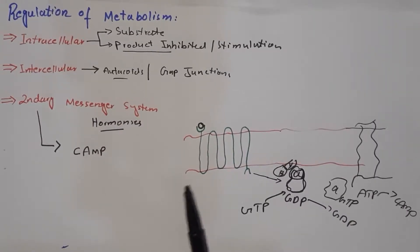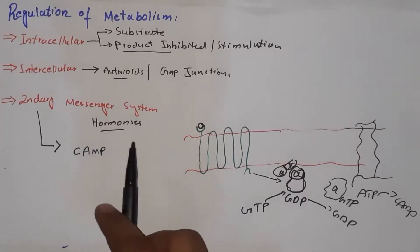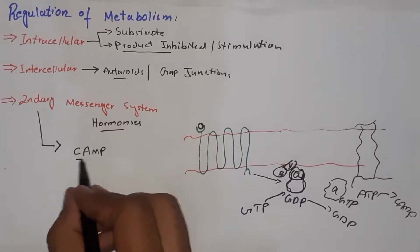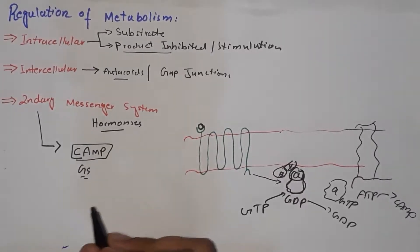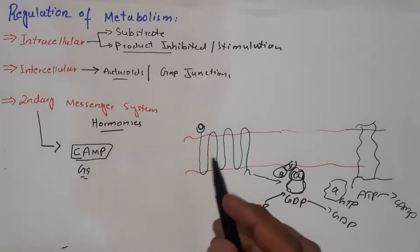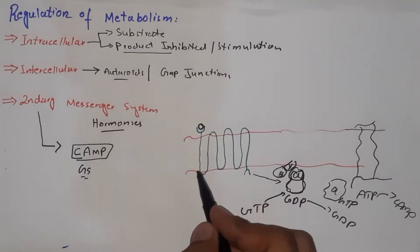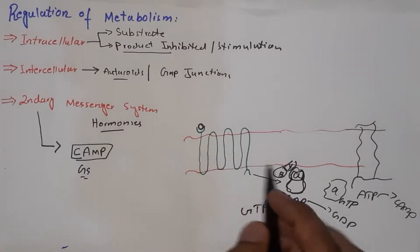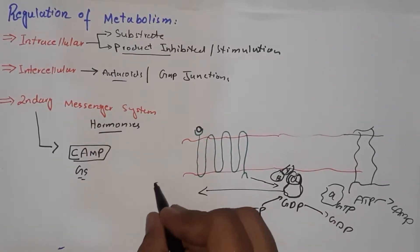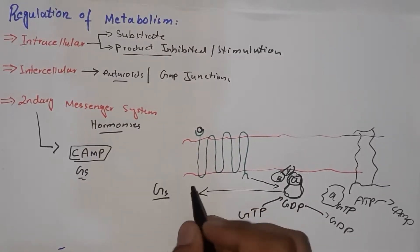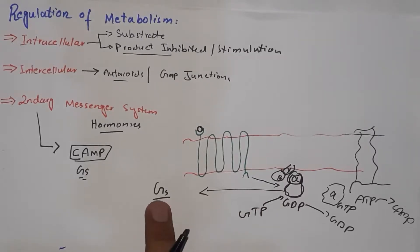To summarize what we've discussed: in the cyclic AMP pathway, also called the GS pathway, a hormone comes and binds to its receptor on the membrane, and this receptor interacts with a G protein. The G protein here is the GS protein — where S stands for stimulatory.